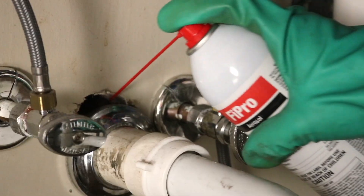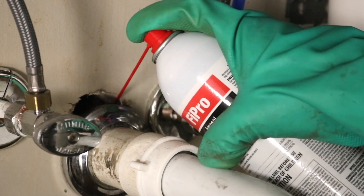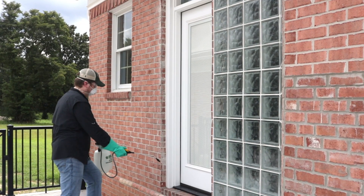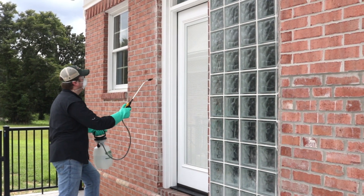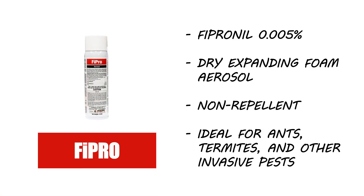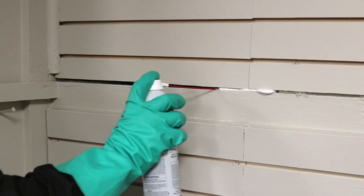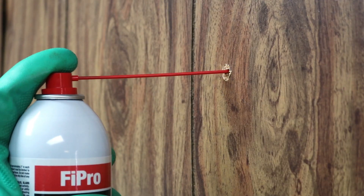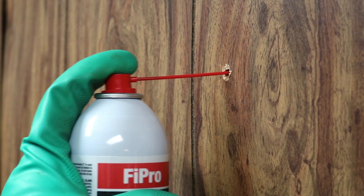Next, we recommend you apply insecticides to treat active infestations and stop future ones. To treat cracks, crevices, and wall voids, Fiprofoaming aerosol is ideal for controlling ants, termites, stink bugs, Asian lady beetles, and other wall-infesting insects. This product contains Fipronil, which is undetectable by labeled insect pests. Spray along the lengths of cracks and crevices and into wall voids and allow the foam to expand.